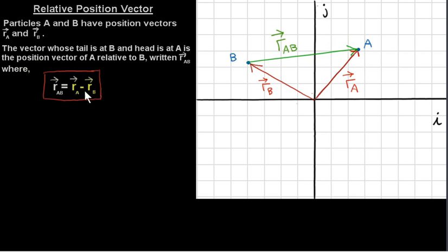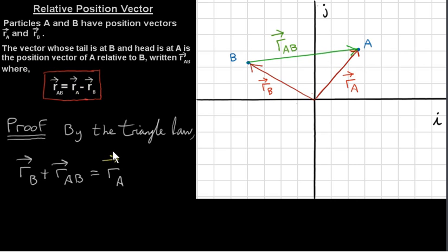Let's look at a quick proof of this. What we do is apply the triangle law to the vectors Rb and RAB. You can see that if we add these two vectors, we get vector Ra. That's just the triangle law.